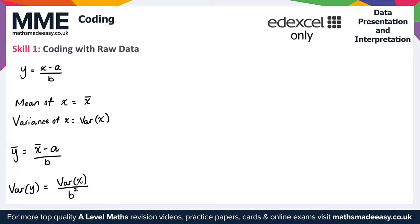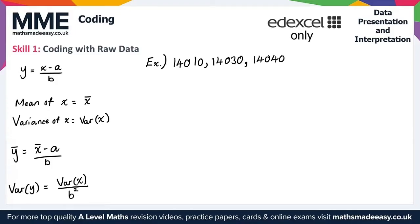Let's take a look at a brief example. We want to find the mean and variance of the following numbers: 14,010, 14,030, 14,040, 14,005, and 14,060.